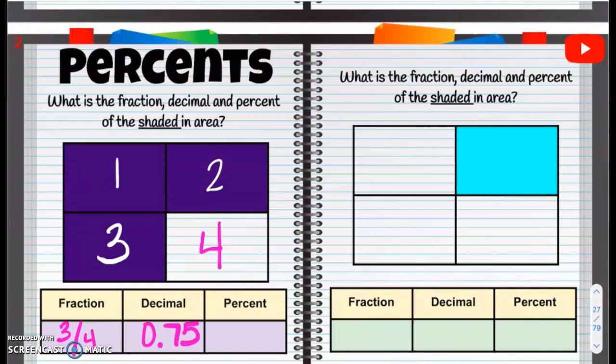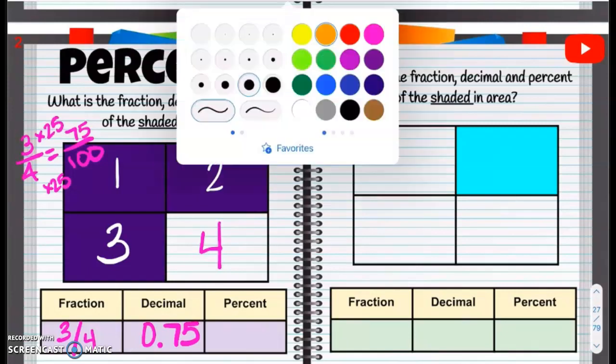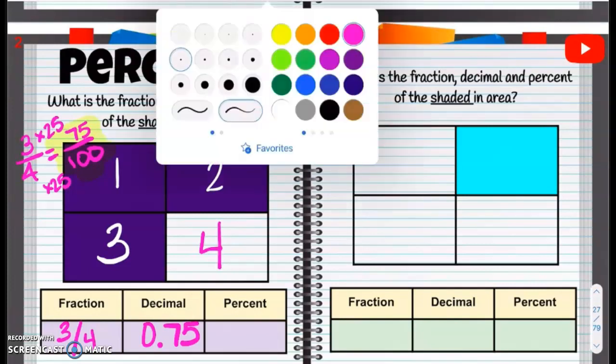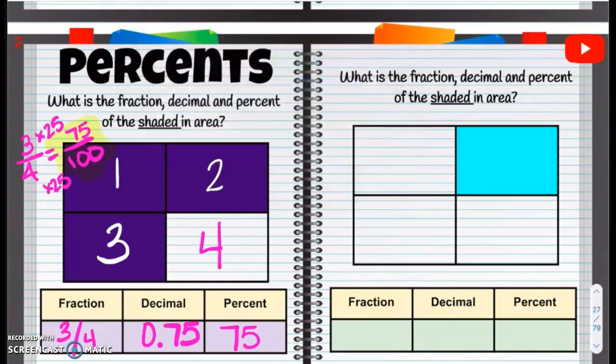So that's going to be 75 hundredths. Three over four, to get to 100, I multiply by 25. I multiply our numerator by 25. Three times 25 is 75. So 75 hundredths, and the percent is going to be 75%, just like if we had three quarters out of four quarters that make a whole dollar.